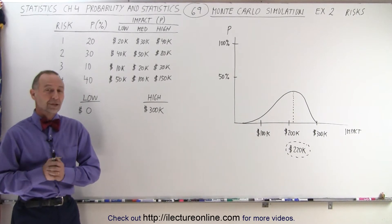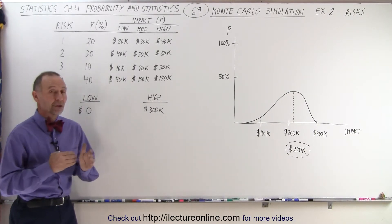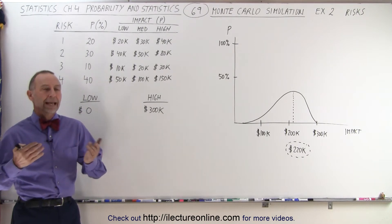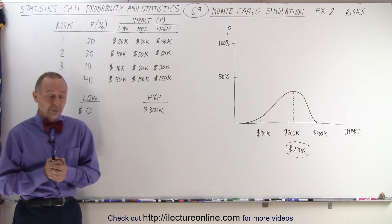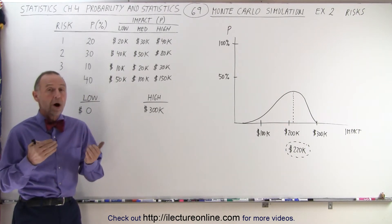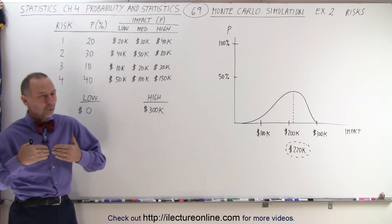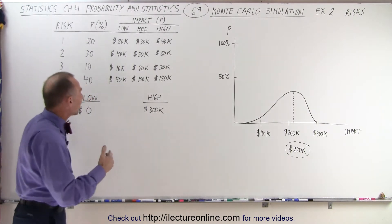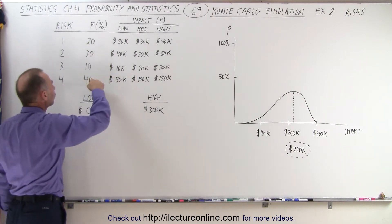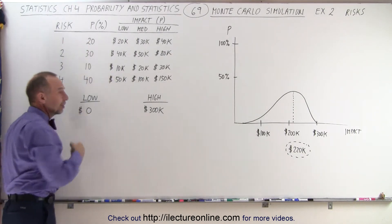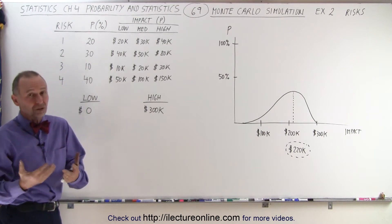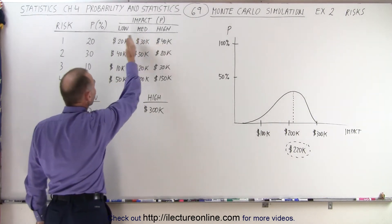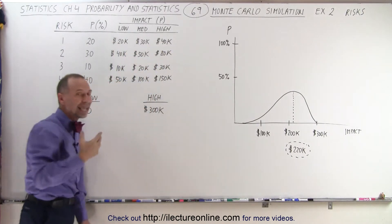Welcome to ElectronLine. Another great application for the Monte Carlo simulation is when you're trying to run a project and you're wondering how much risk is associated with your project. In other words, what could go wrong, and if it goes wrong, how much would it cost to remedy that problem? We have to assign a certain probability to each of the possible risks that could occur — what's the probability that the risk will actually materialize, and if it materializes, what's the impact and how much will it cost to take care of that risk?